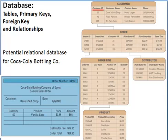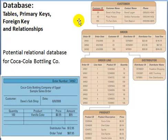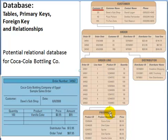Let's use the following sample database for a Coca-Cola bottling plant as an example to discuss some basic terminology and concepts in a typical database. First of all, a database is really a collection of tables. In this case, customer, order, distributor, order line, and product are tables — so we have five tables in this particular database.